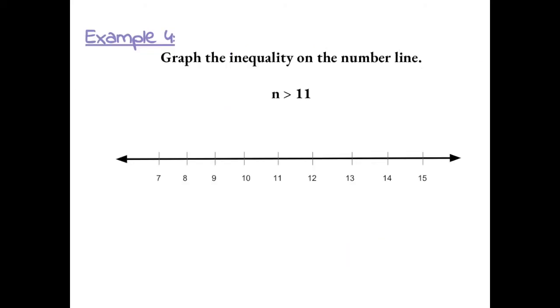Example 4. Graph the inequality on a number line. So if N could be any number that is greater than 11, we're going to put an open circle at 11 because 11 itself is not a solution to the inequality. But any number right after 11 is a solution, and we could show that by shading all the numbers that are larger than 11.